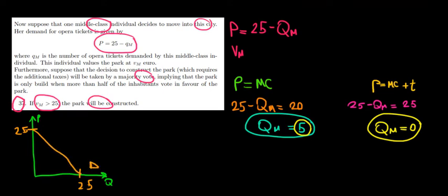The price is set at 20 euros. So the price would be 20. Okay, let's suppose it to be over here. Now, when the price equals the marginal cost, then we would demand five tickets.